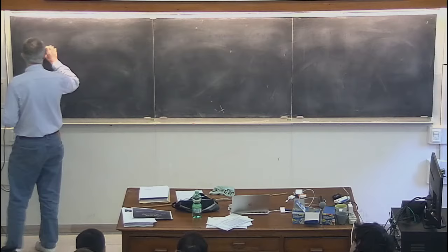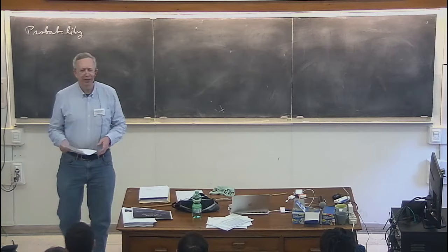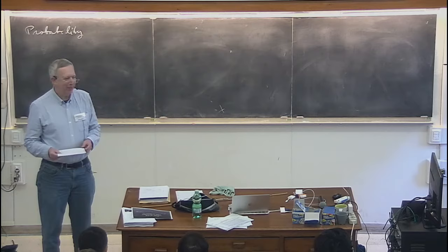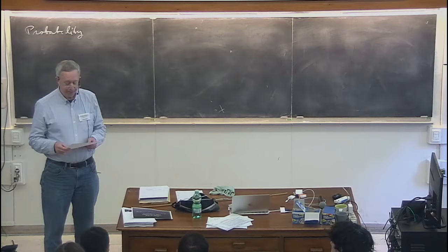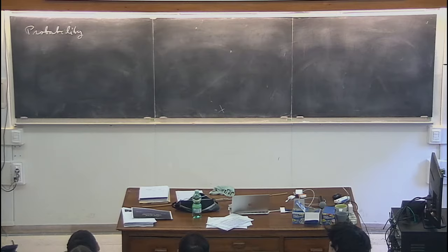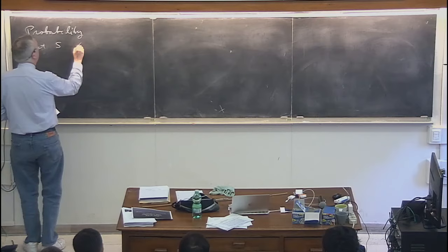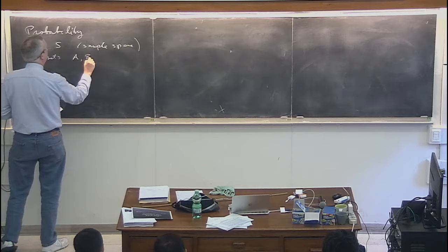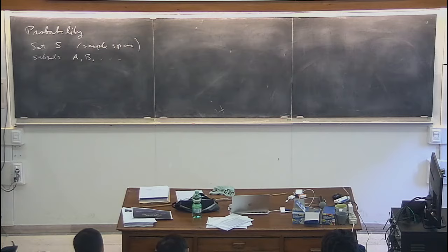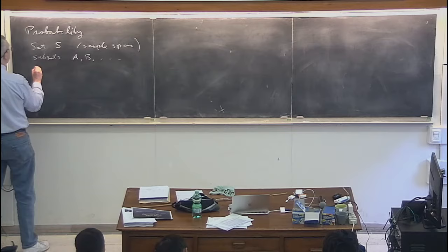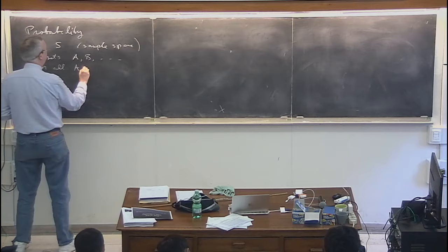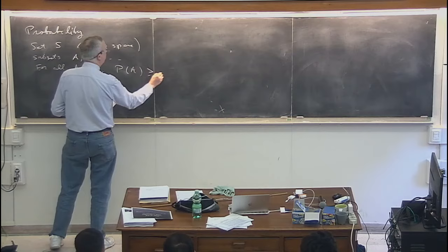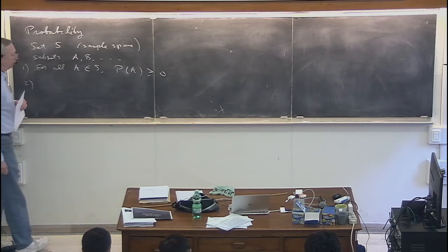So let's start with probability. This is one of these topics that everybody sort of has an intuitive notion for, and I think even cavemen or primates had some notion of probability, but to define it mathematically is actually a bit slippery. The way that this was done by Kolmogorov in the 1930s was in the language of set theory. You have a set S called the sample space, and you have subsets A, B, and so forth. For all subsets A in S, I define a real-valued function called the probability, which is greater than or equal to zero. That's axiom one.